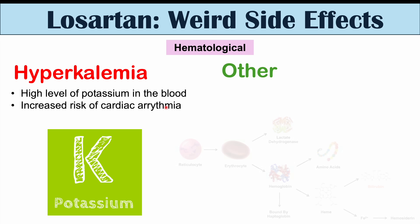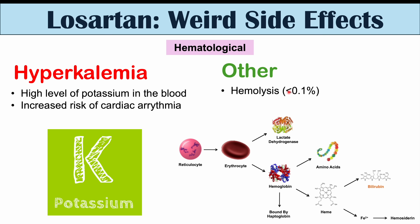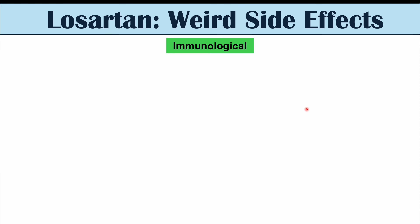Other hematological side effects of Losartan include hemolysis — a breakdown of red blood cells. This is a very rare side effect, occurring in less than 0.1% of patients. It's likely either immune-mediated or occurs only in certain individuals, such as those with glucose-6-phosphate dehydrogenase deficiency. Additionally, some individuals can develop thrombocytopenia, which is a low platelet count.